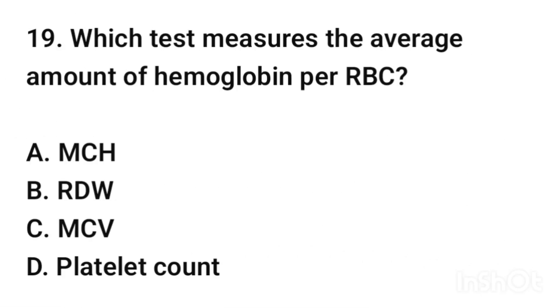Question number 19. Which test measures the average amount of hemoglobin per RBC? The correct answer is option A: MCH (Mean Corpuscular Hemoglobin).